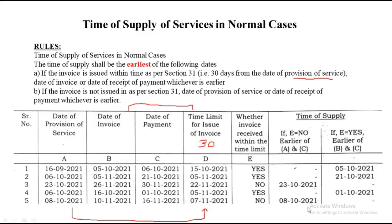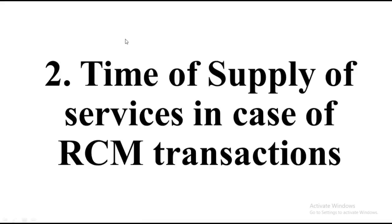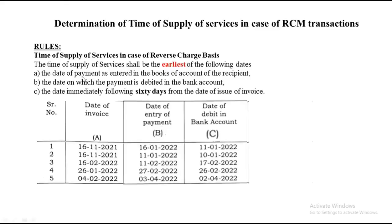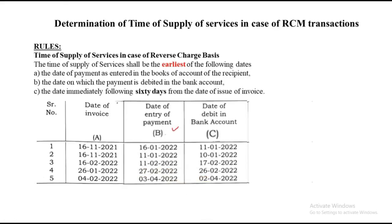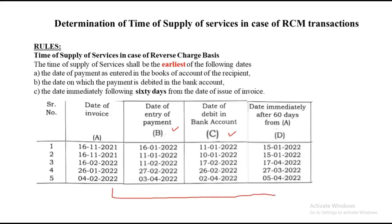That covers time of supply of service in normal cases. Now the last type: time of supply of services in case of reverse charge mechanism. The rule is the earlier of: date of payment as entered in the books, the date on which payment is debited in the bank account, and the date immediately following 60 days from the date of issue of invoice. You will need to create another column with dates 60 days ahead of the invoice date, then compare those three columns — whichever is earliest is your time of supply.